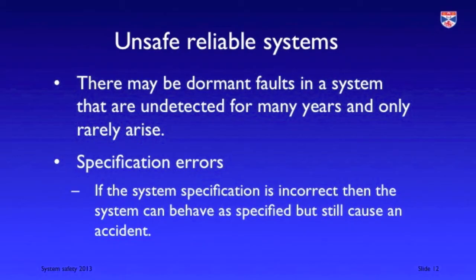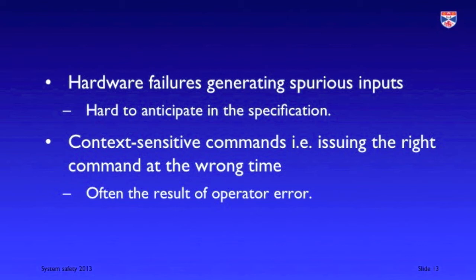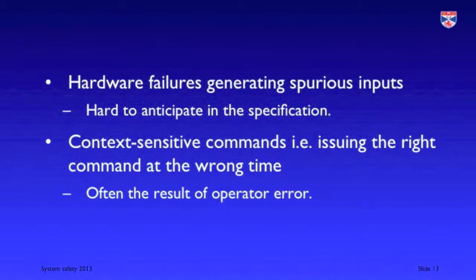There are a number of reasons why systems that seem to be reliable may be unsafe. First, there may be dormant faults in the system that reliability testing has not exposed, which may come to light in exceptional circumstances. It's also possible that there are specification errors or misunderstandings, so the system implemented does not reflect the practical requirements of its operational environment. When hardware goes wrong, it can produce very strange signal patterns — a failing hardware component can produce patterns way outside our specification and cause equipment to malfunction. There is also the common possibility of operators issuing the right commands at the wrong time.